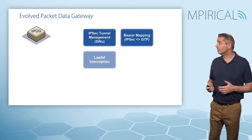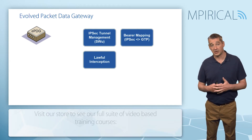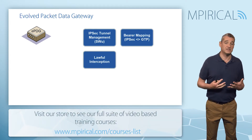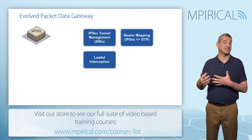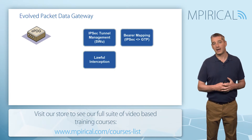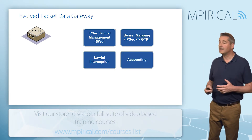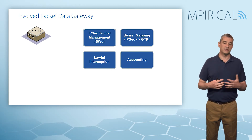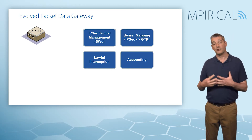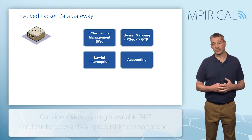In addition, we also have the ability for lawful interception, enabling security services to gain access to traffic passing across our Wi-Fi network. And finally, we have accounting — a responsibility of the ePDG is to create records which can be passed on to billing functions.